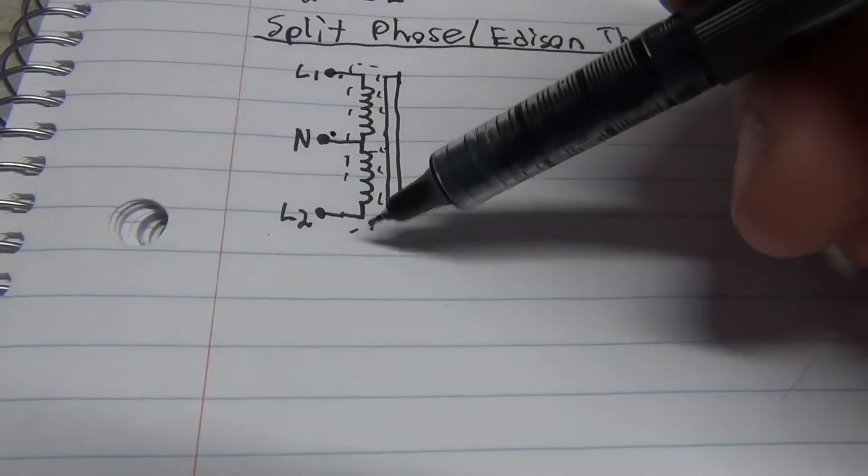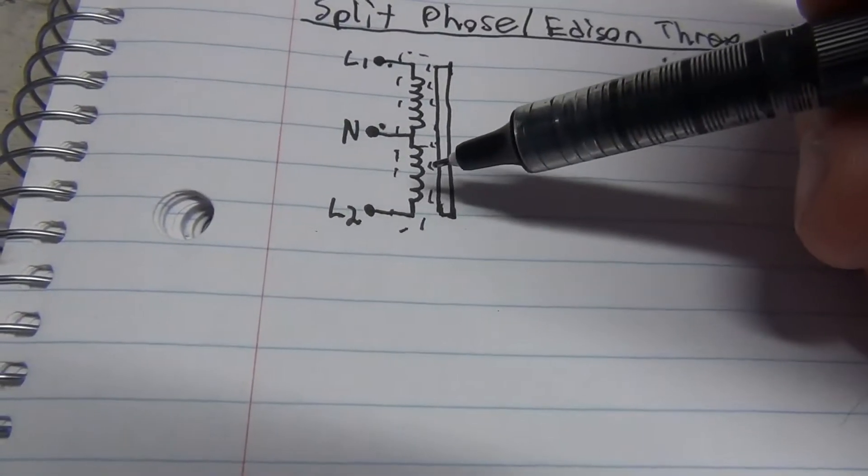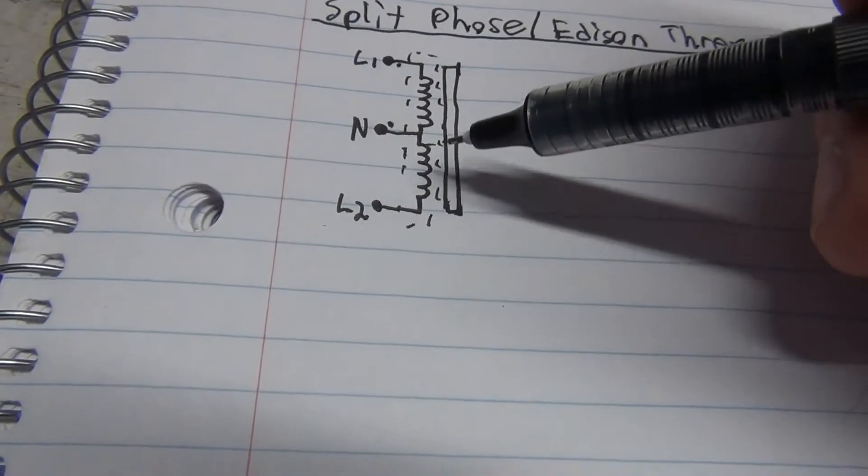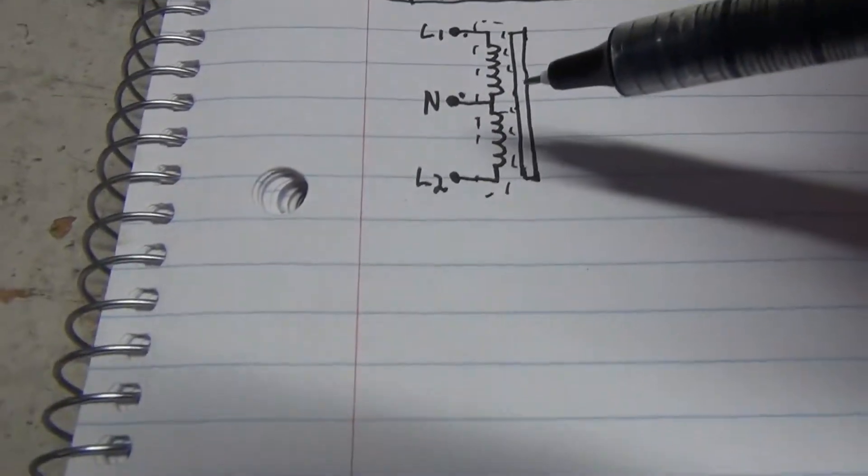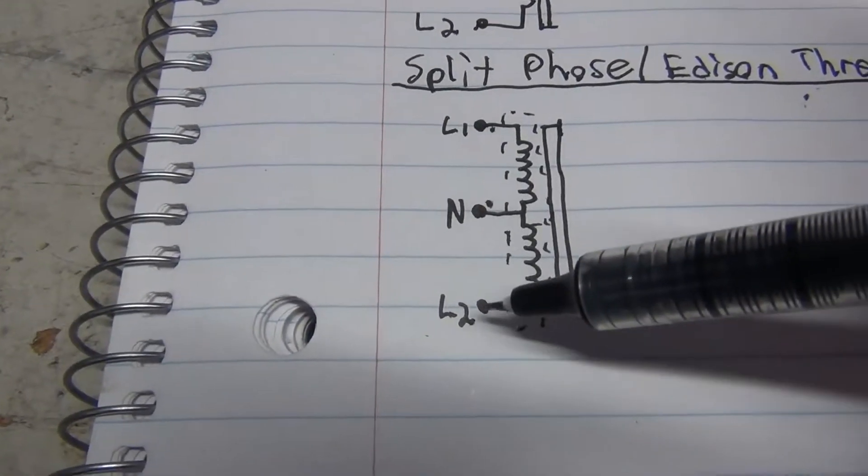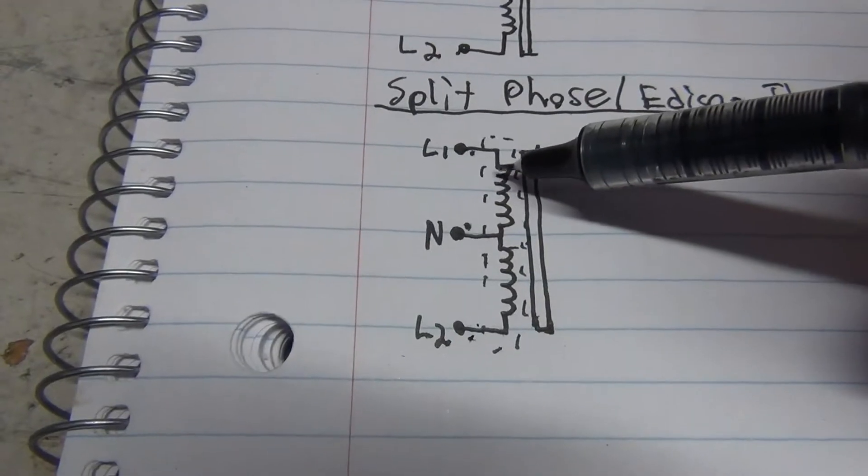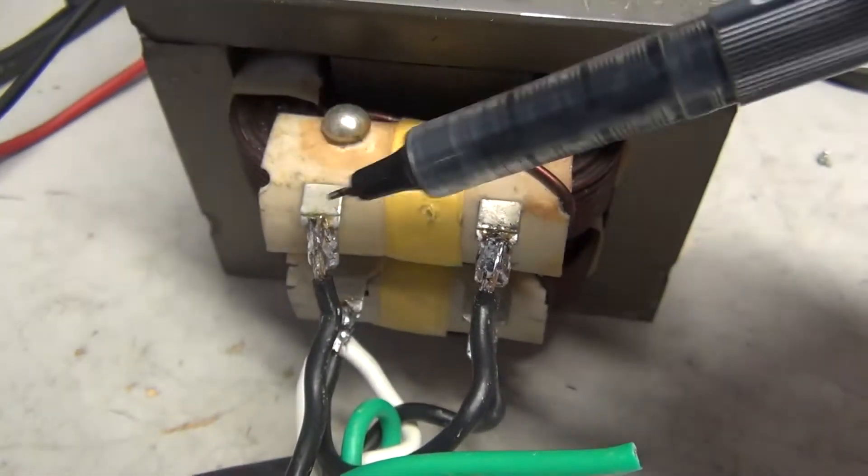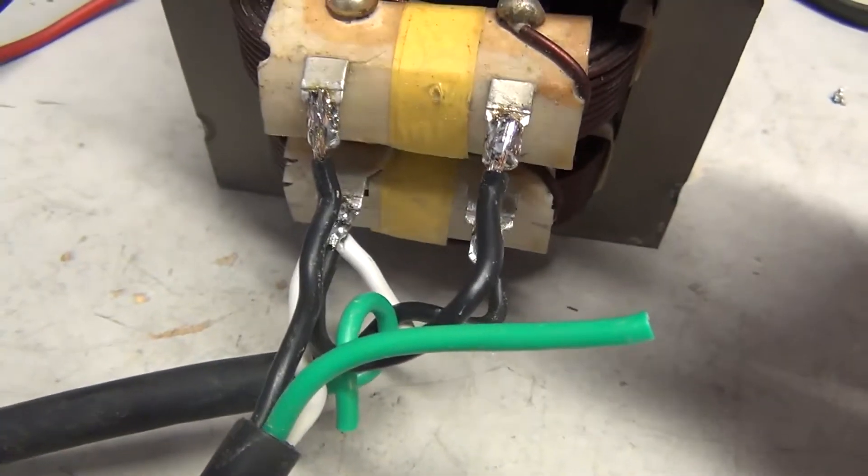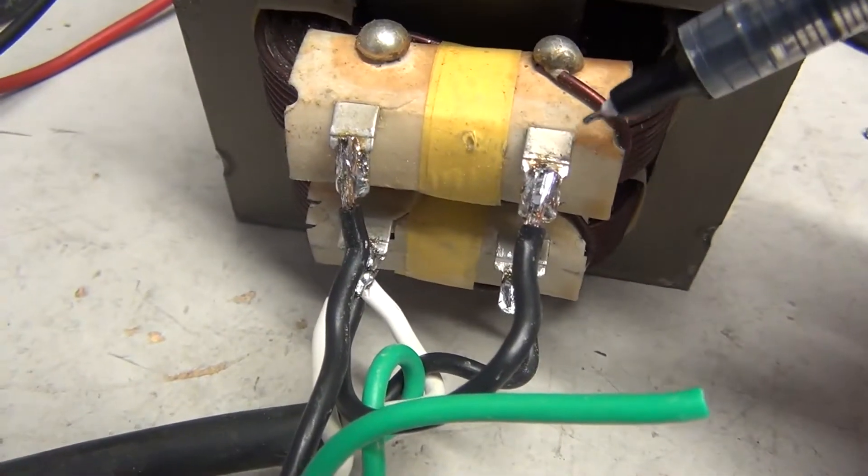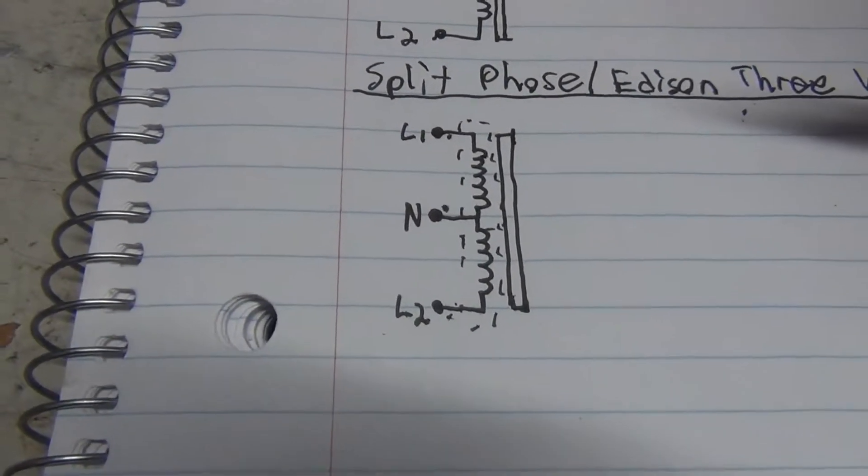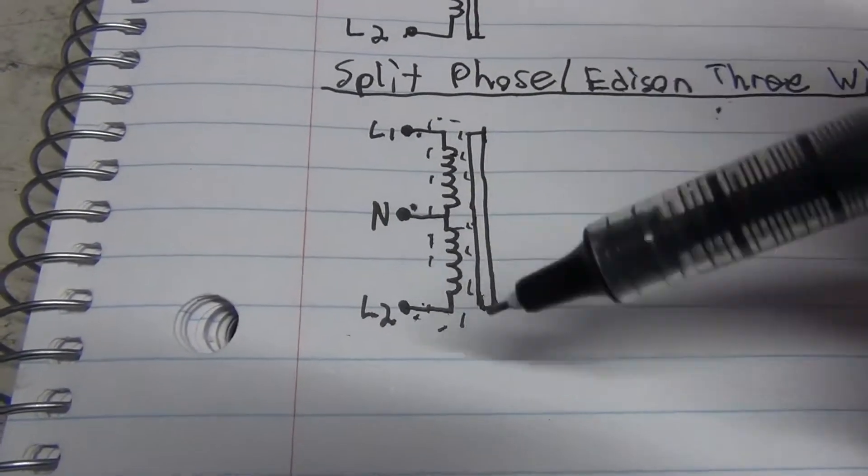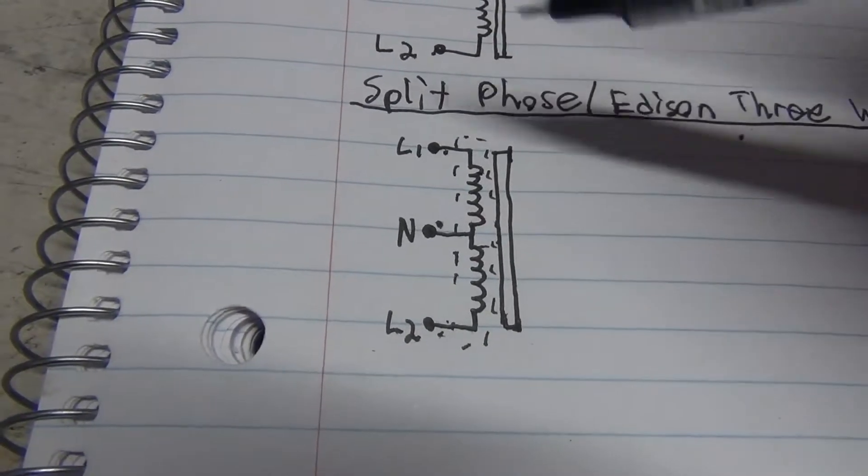And then on this side rather than going in series like the first configuration, you have to phase your winding. You want the voltage from here to be 180 degrees out of phase from here. So you just have to switch these two leads until on your multimeter you'll get 240 volts from line 2 to line 1. That's essentially a center-tapped auto transformer.